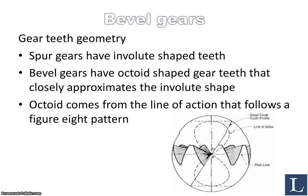As you know, in spur gears we have involute-shaped gear teeth, but in the case of bevel gears we have what is known as octoid-shaped gear teeth, which closely approximate the involute shape but not quite — and that was also the reason for the condition related to the correction factors. The octoid comes from the line of action that follows a more or less figure-eight pattern, as you can see in the picture, where you have the pitch line and this figure-eight pattern.